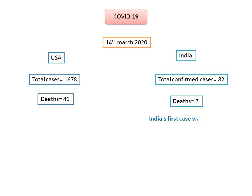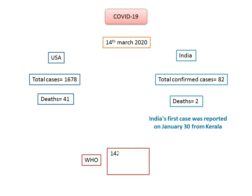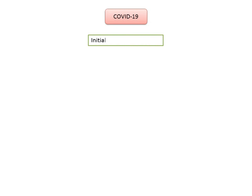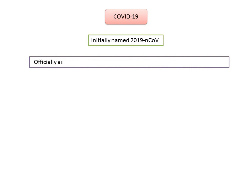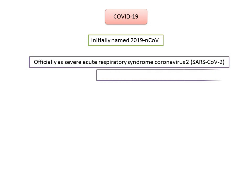The first case in India was reported on January 30th in a patient from Kerala. As of 14th of March 2020, WHO has reported about 142,649 cases spanning over 135 countries, with a reported 5,393 deaths. COVID-19 was initially named 2019 novel coronavirus — novel meaning new. This novel coronavirus has been designated as Severe Acute Respiratory Syndrome Coronavirus 2, that is SARS-CoV-2, by the International Committee on Taxonomy of Viruses.